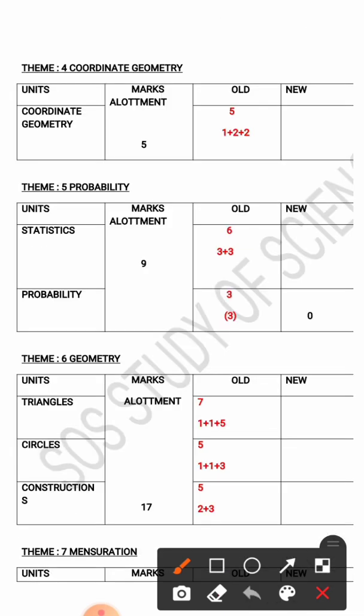Theme 4 is Coordinate Geometry. The lesson under this theme is Coordinate Geometry, and the total marks allotment is 5. In the previous year's question paper, there were totally 3 questions: 1-mark 1 question and 2-mark 2 questions, totalling 5 marks allotted for this lesson.